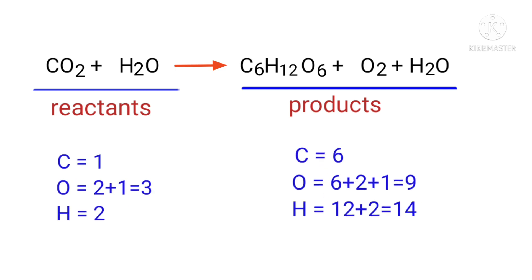If you look at this equation, the equation is not balanced. In the reactants side there are 1 carbon atom, 3 oxygen atoms, and 2 hydrogen atoms present. In the products side there are 6 carbon atoms, 9 oxygen atoms, and 14 hydrogen atoms present. The number of atoms are not balanced on both sides.